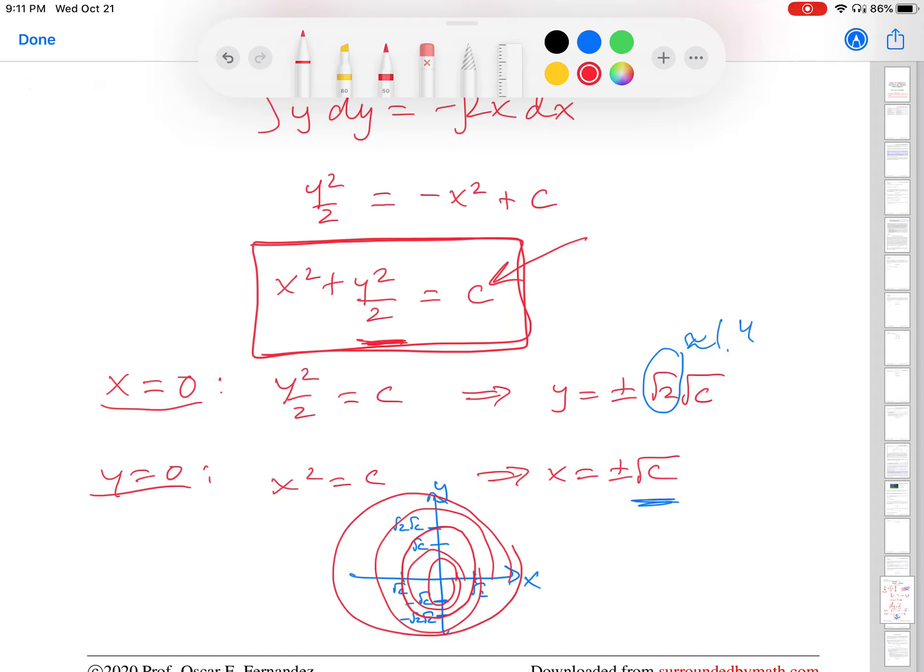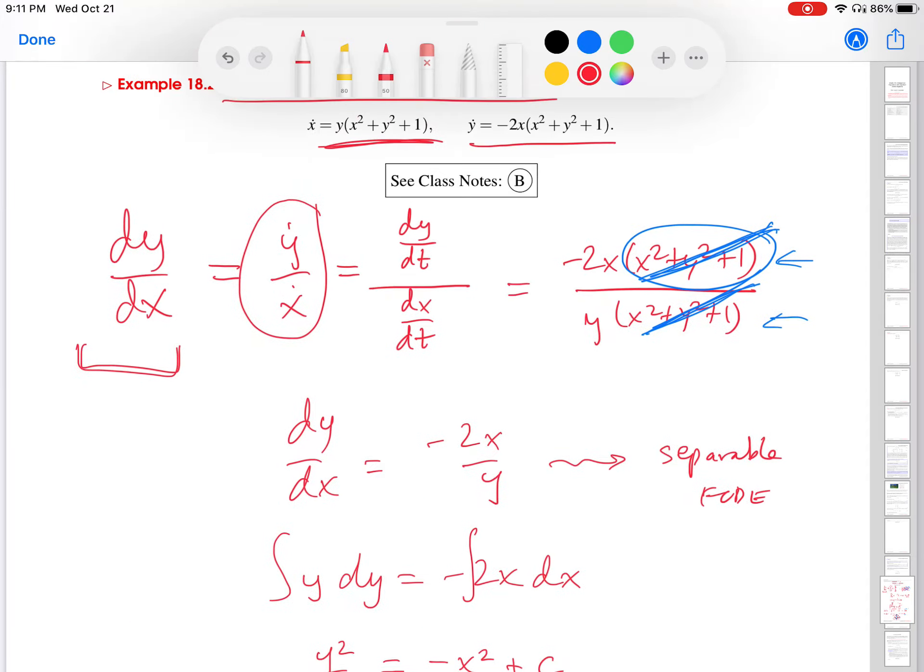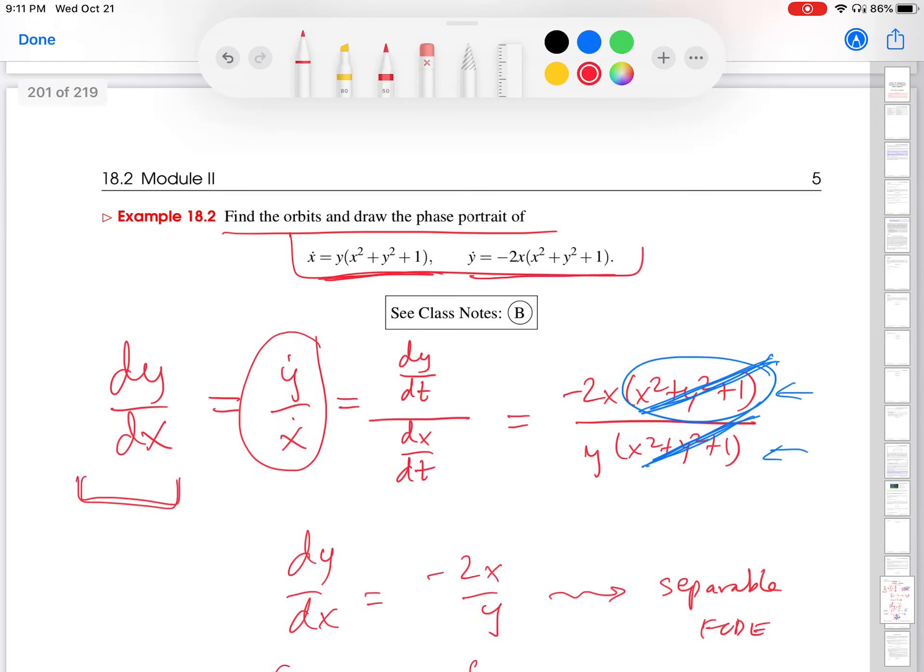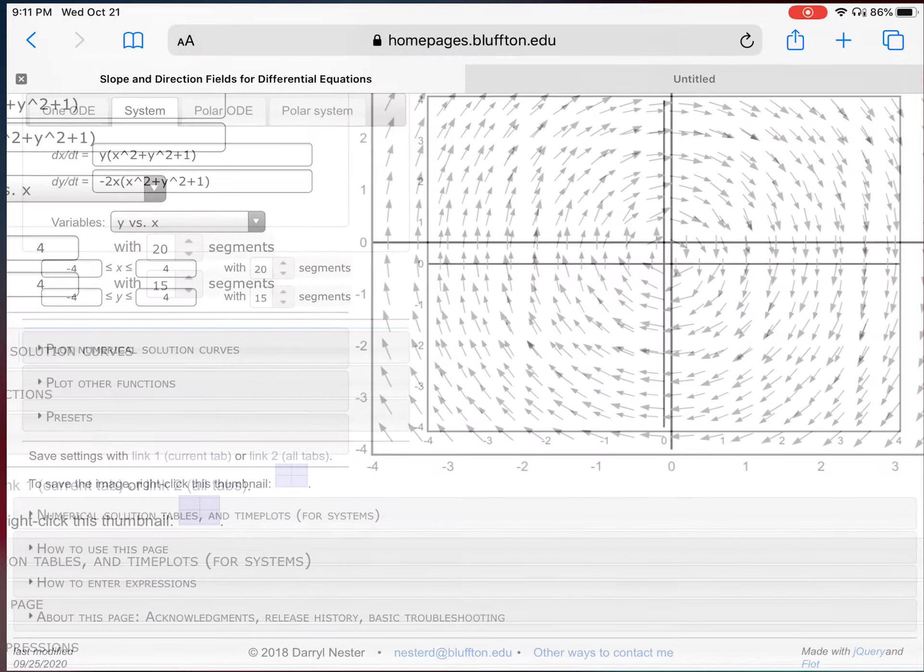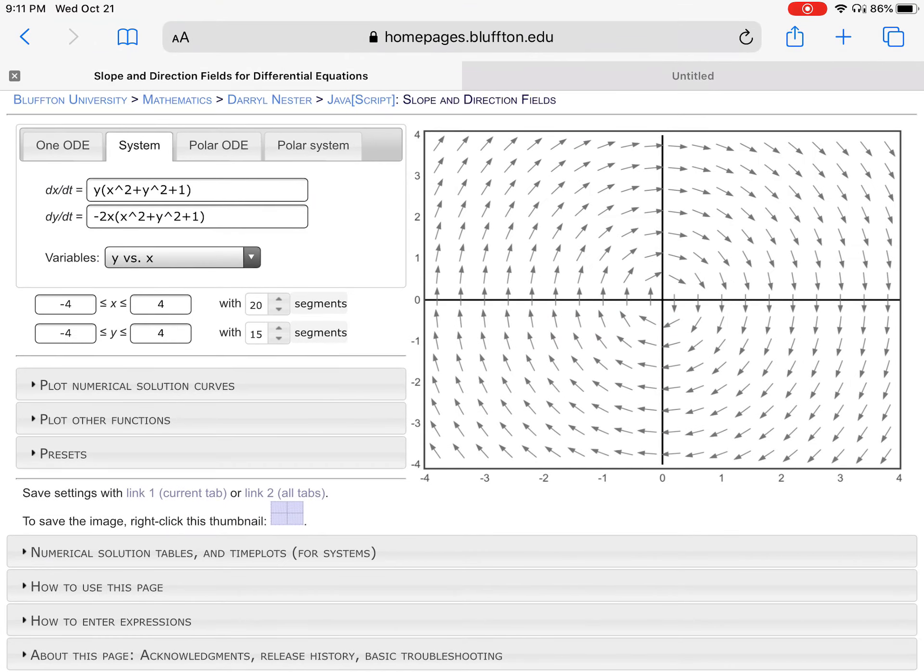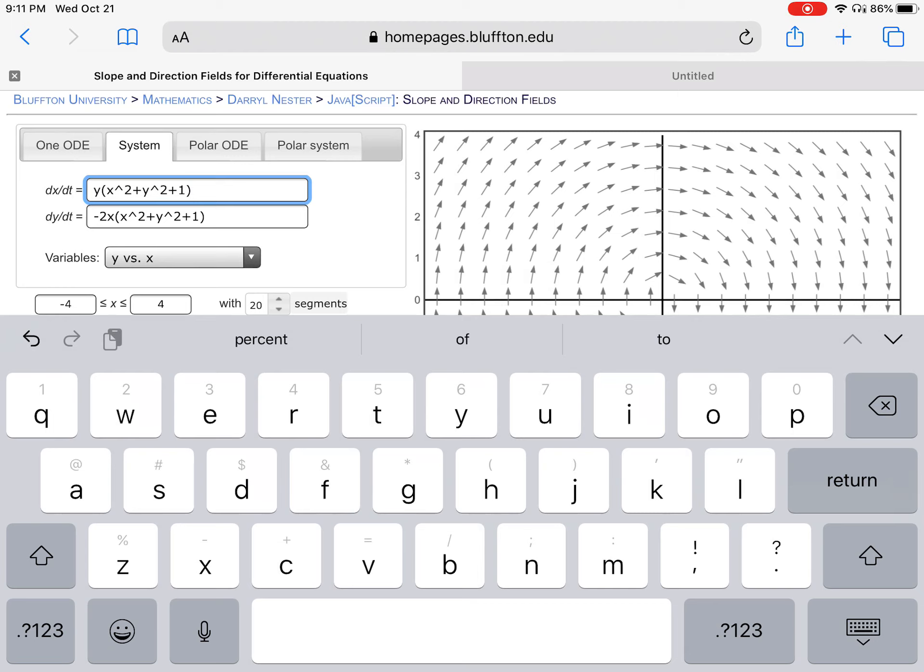Again, we haven't talked about directions. How do we know, are these traced out counterclockwise, clockwise? We will do that in the next video. But let me just show you, scrolling back to the actual system here, let me show you the direction fields that will confirm what we have found. So I've put it in here already. And this is the system up here.